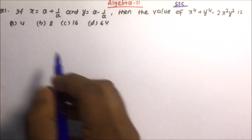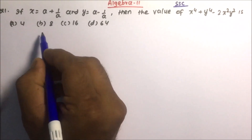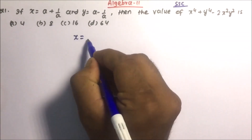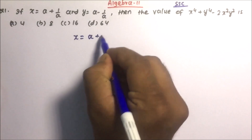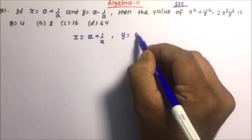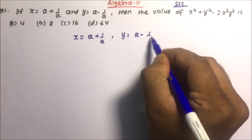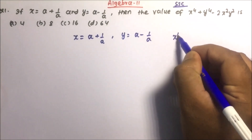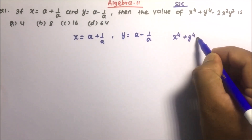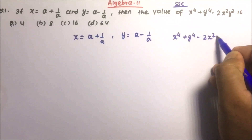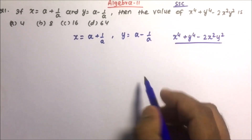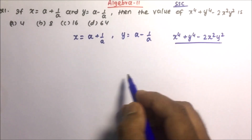Let us start with question number 1. If x equals a plus 1/a, and y equals a minus 1/a, then you have to calculate the value of x⁴ + y⁴ - 2x²y².